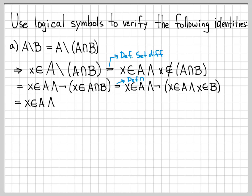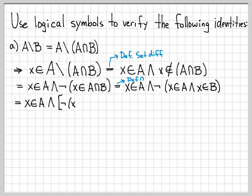Let's write this as X is in A, and now I'm going to use DeMorgan's Law. Any time we have a NOT in front of something, I can distribute that NOT using DeMorgan's. I have to flip my AND symbol to an OR symbol, and then put my NOT there — so I've distributed the NOT across everything by using DeMorgan's Law.